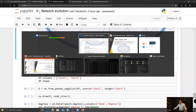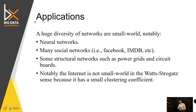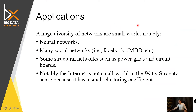So these are the two properties of the evolution of the network: mainly preferential attachment and the small world phenomenon. We can see that these actually explain a lot of real-life networks, like actual neural networks, social network data like Facebook, IMDB, authors, and some structural networks like power grids and circuit boards.